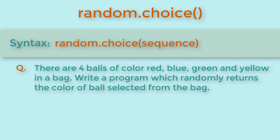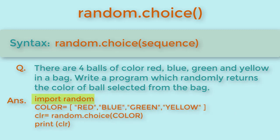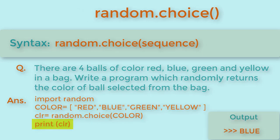The question that can be asked on this is that there are four balls of color red, blue, green, and yellow in a bag. Write a program which will randomly return the color of ball selected from the bag. Here we will first import the library, then create a list of options which are colors. Then we will call random.choice function with this list and print the return value.